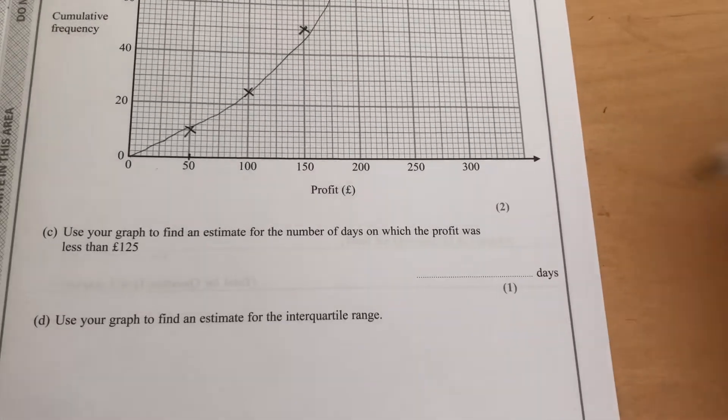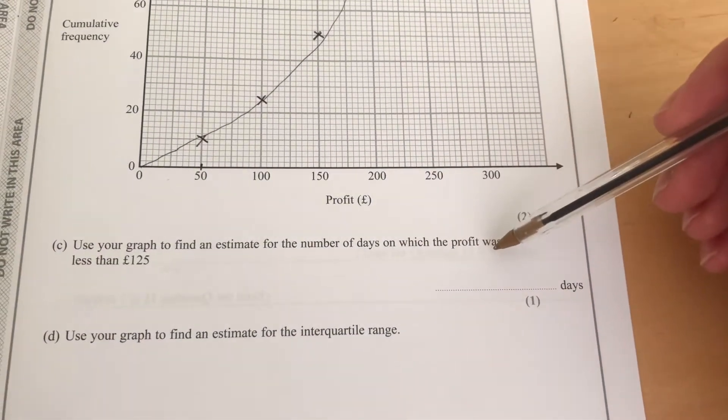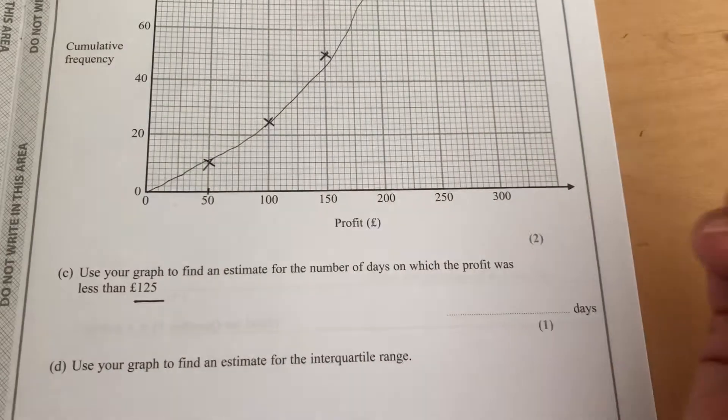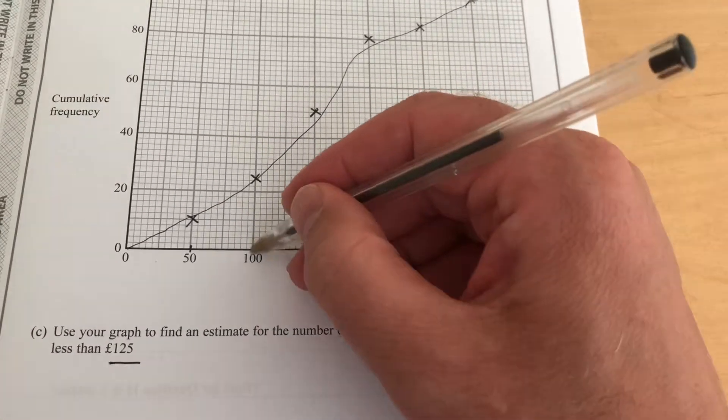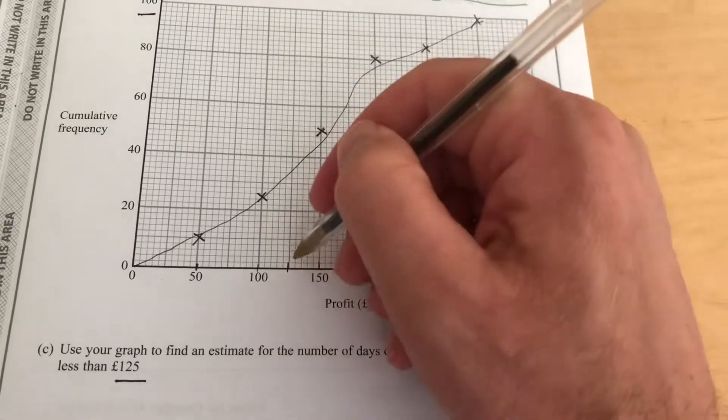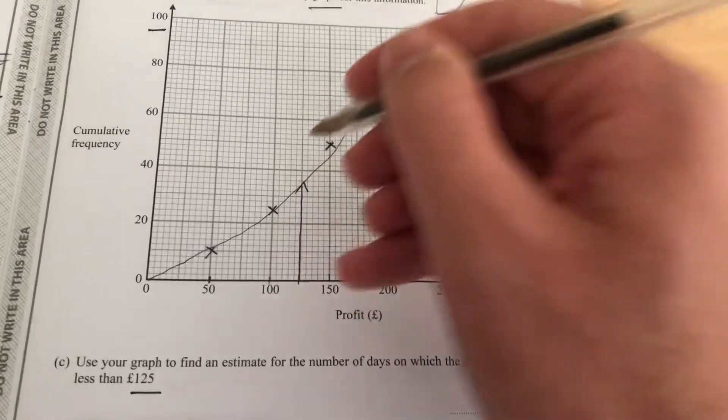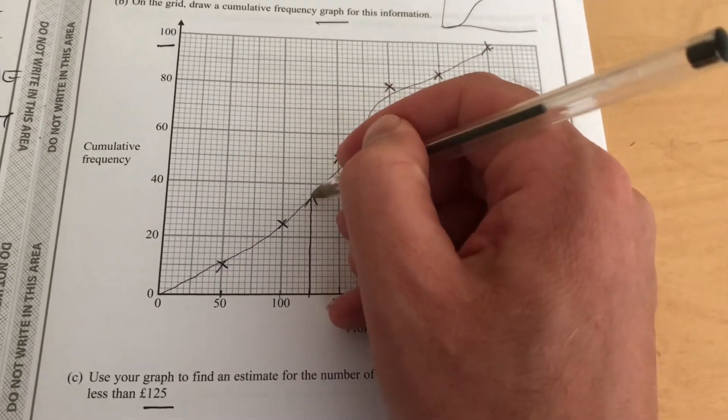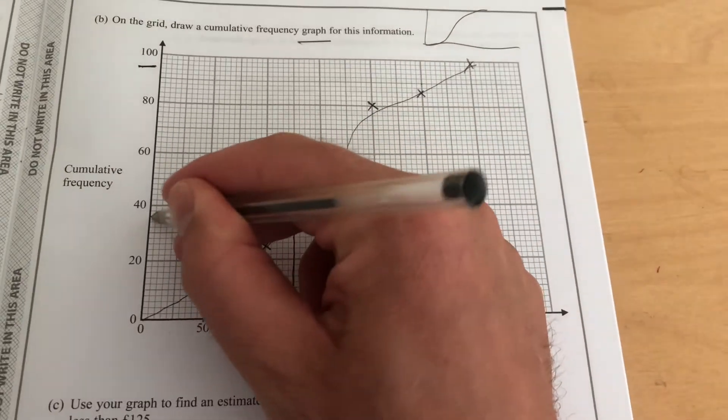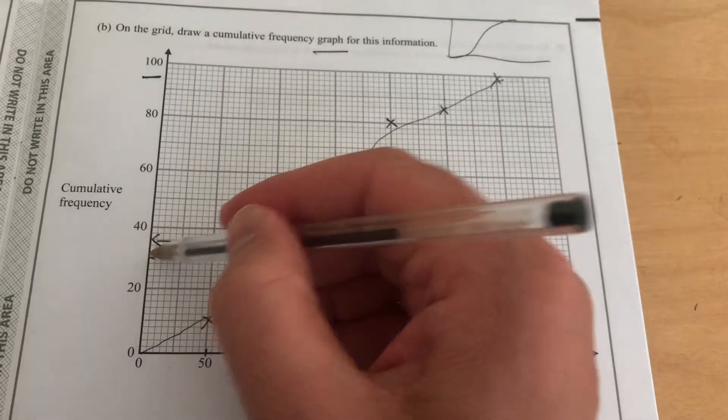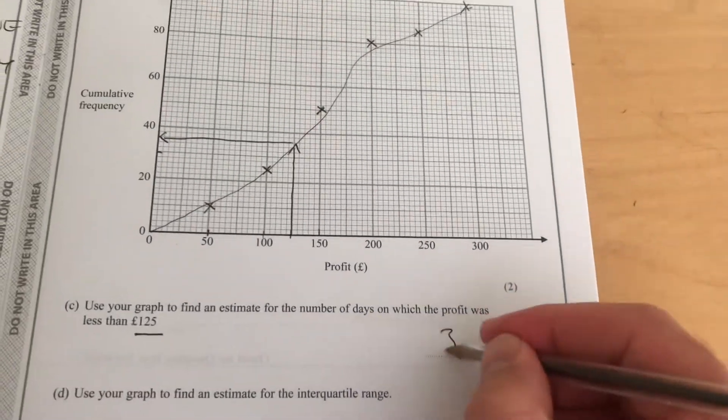Now it says, use your graph to find an estimate for the number of days on which the profit was less than £125. So go to the profit, and we go to £125. There's £150, there's £100, so £125 would be halfway. We'll read up from there. Use a ruler, preferably for this, but drawing freehand. And I'll read across there. And I'll say, if that's 30, 32, 34, about 36 days.